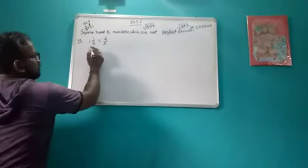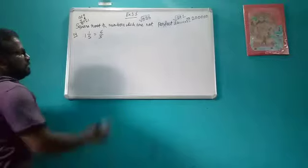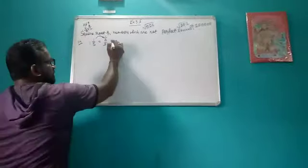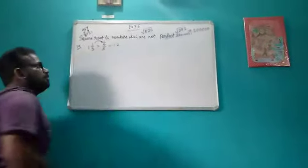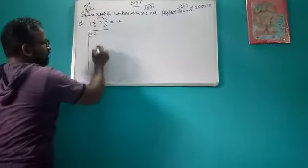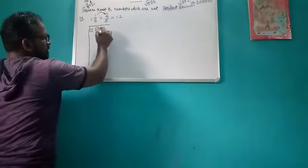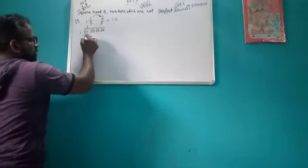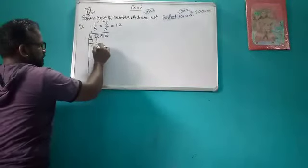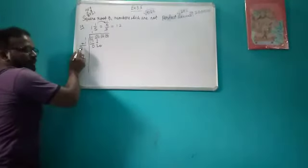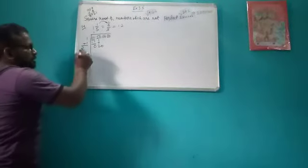Next we have to find the square root of mixed fraction numbers. We will convert it into a fraction — it becomes 6 upon 5. When you divide 6 by 5 you will get 1.2. So again you will find the square root of 1.2. We will put one zero here, one pair, then one pair after decimal. The square root of 1 is 1, and 1 minus 1 is 0.